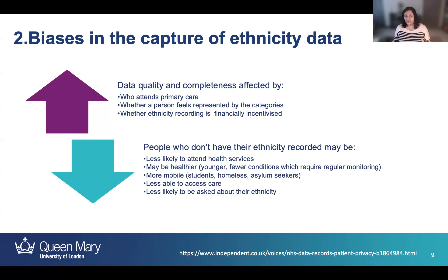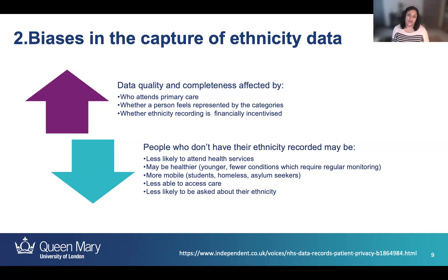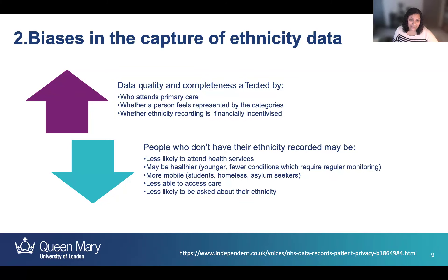Trust in data may also relate to biases in the capture of ethnicity data. In electronic health records, people may be asked about their ethnicity when they come to the GP for a health check or other condition. The data quality and completeness of ethnicity data are affected by who attends primary care, whether that person feels represented by the standard census categories, and whether ethnicity recording is financially incentivized. For about ten years, recording of ethnicity and first language received a financial payment under the Quality and Outcomes Framework in the UK. During this time, completeness increased from about 26% before incentivization to 88% after — showing that financial incentives to record socially important data can have huge benefits for both research and care.